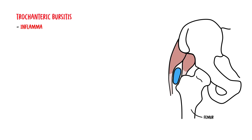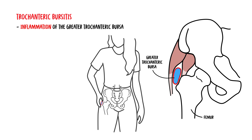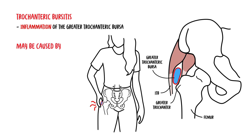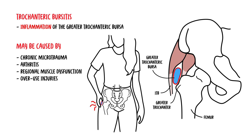Trochanteric bursitis is inflammation of the greater trochanteric bursa. This bursa normally minimizes the friction between the greater trochanter and the iliotibial band which passes over the bursa. Bursal inflammation may be caused by several conditions such as chronic microtrauma, arthritis, regional muscle dysfunction, overuse injuries, and acute injuries.